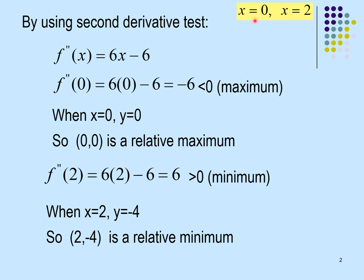Next, we find the inflection point by setting the second derivative equal to 0: 6x − 6 = 0, giving x = 1. When x = 1, substitute into f(x) to get y = −2. So the inflection point is (1, −2).